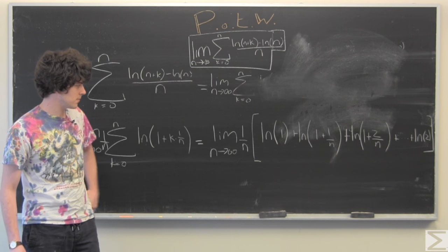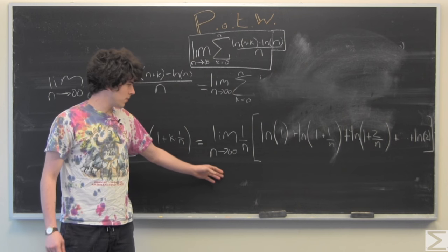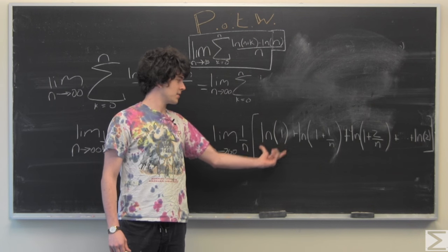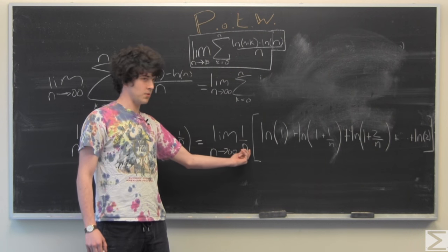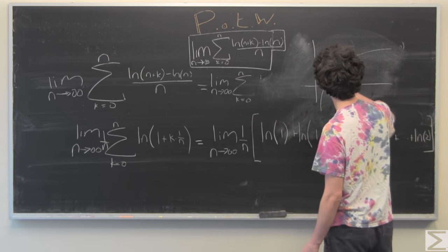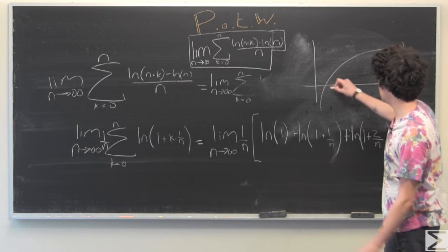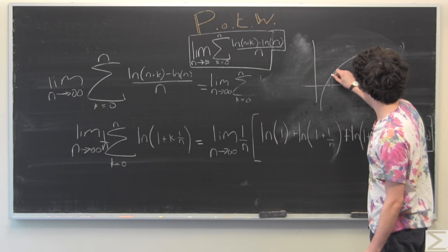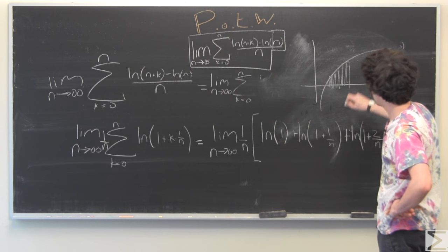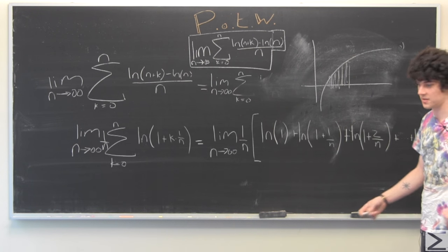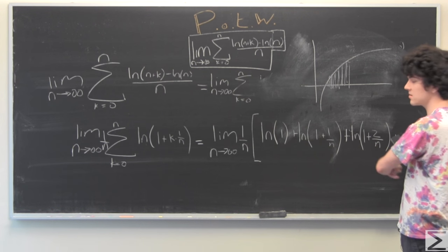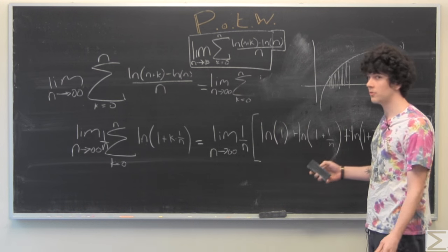So what this all means is we're adding up values of ln of x plus delta x and multiplying each of those by some delta x. To make it more clear, maybe drawing a graph of what we're doing will help. So we're integrating, basically. It was a big, messy problem that we managed to get into something that we're all hopefully familiar with.